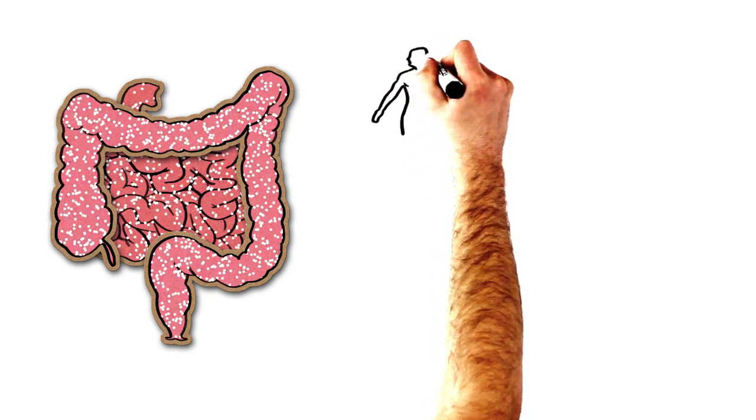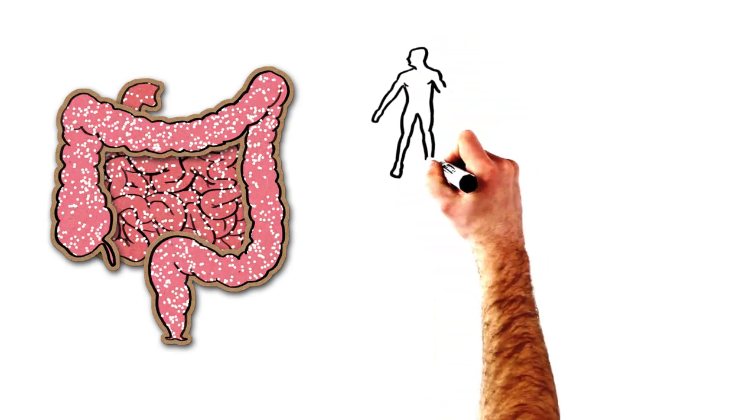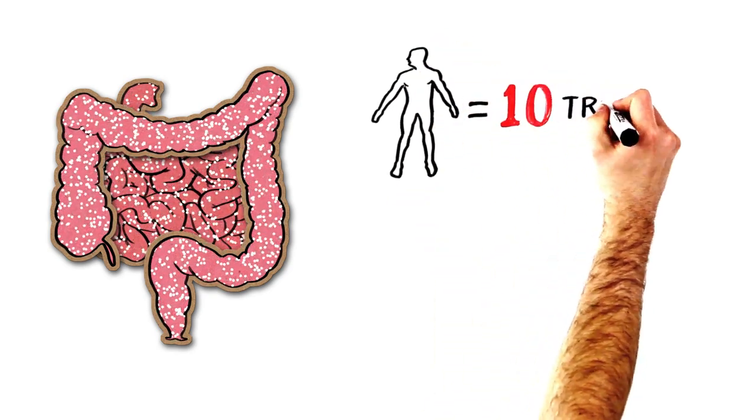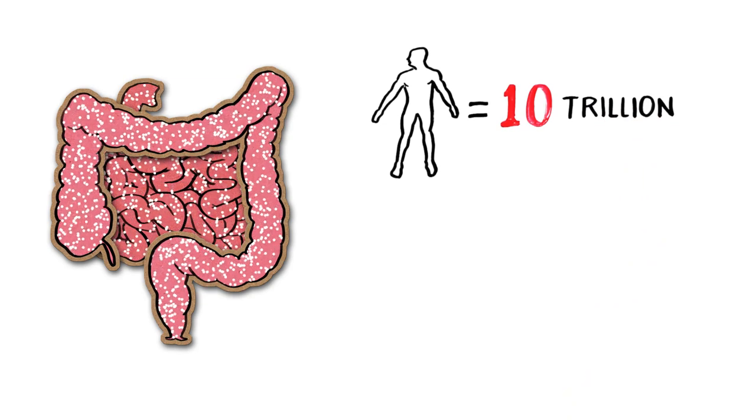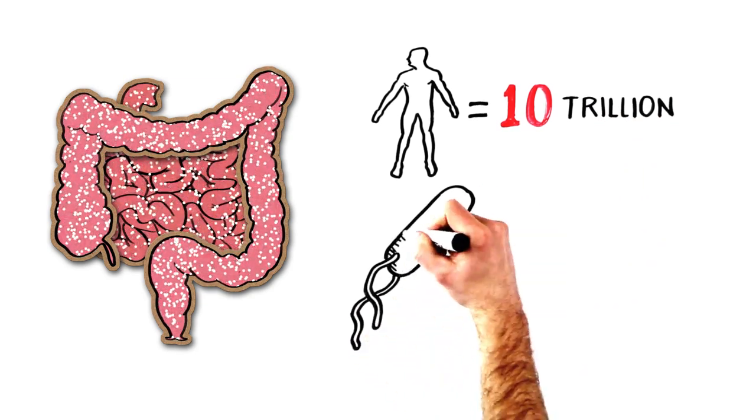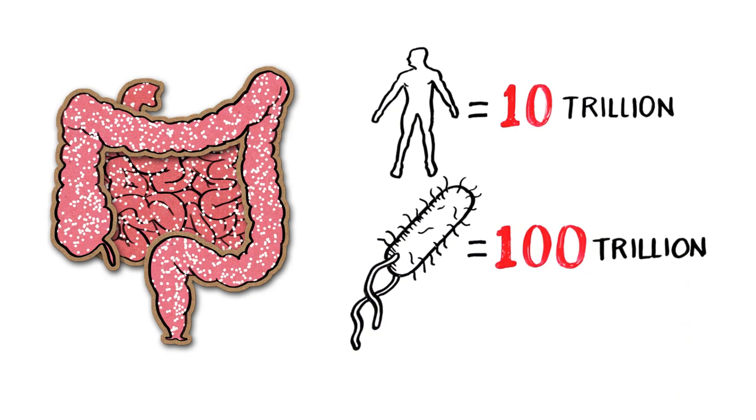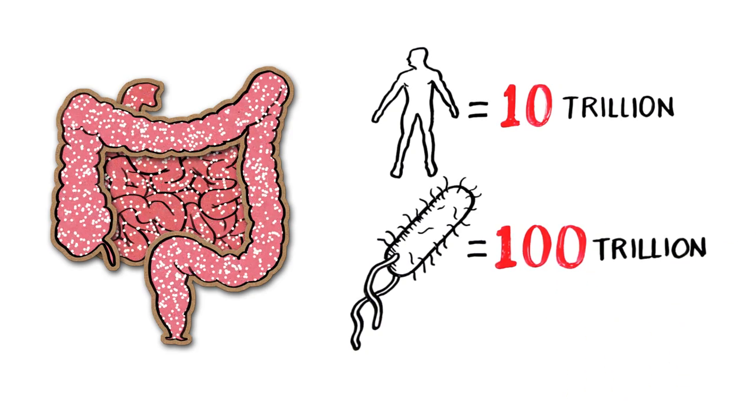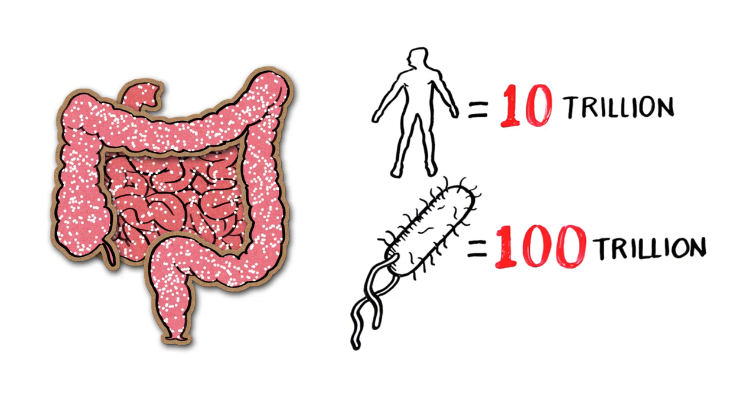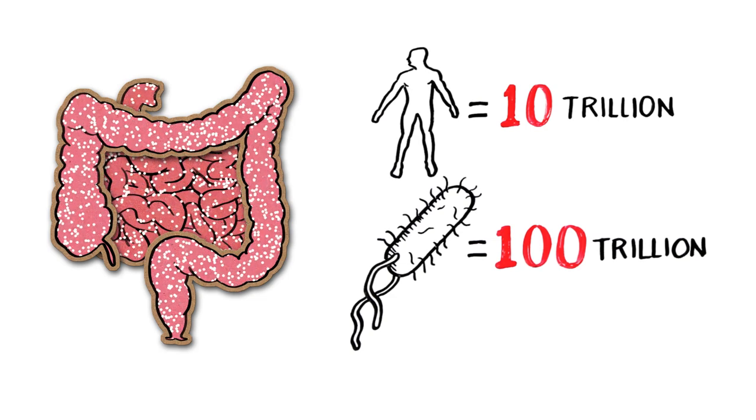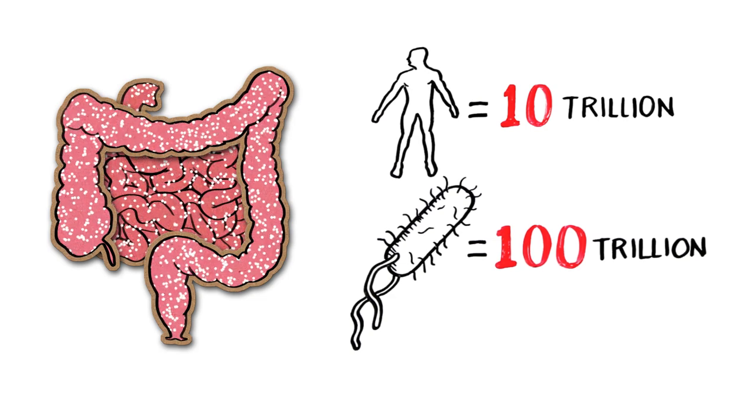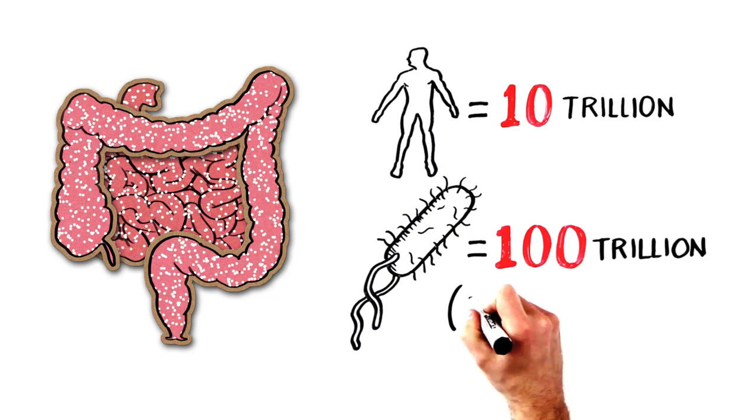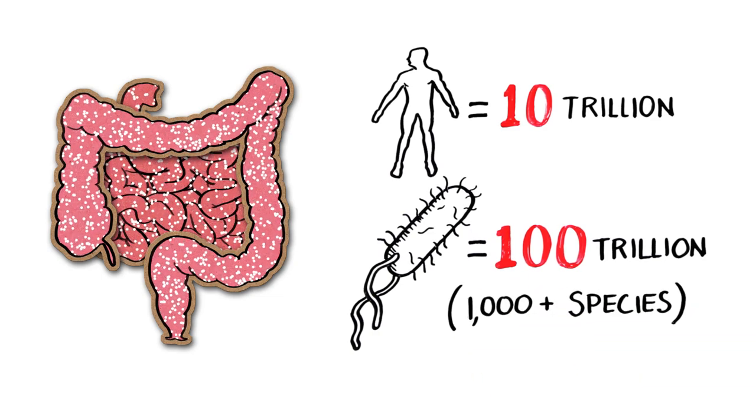Now, there are a lot of bacteria living in your gut. When I say a lot, think about this. There are about 10 trillion cells that make up the tissues of the human body, but roughly 100 trillion bacterial cells that exist in the digestive tract alone. That means there are 10 times the number of bacteria in your gut as there are human cells in your entire body. And there are over 1,000 different species living in the intestines.